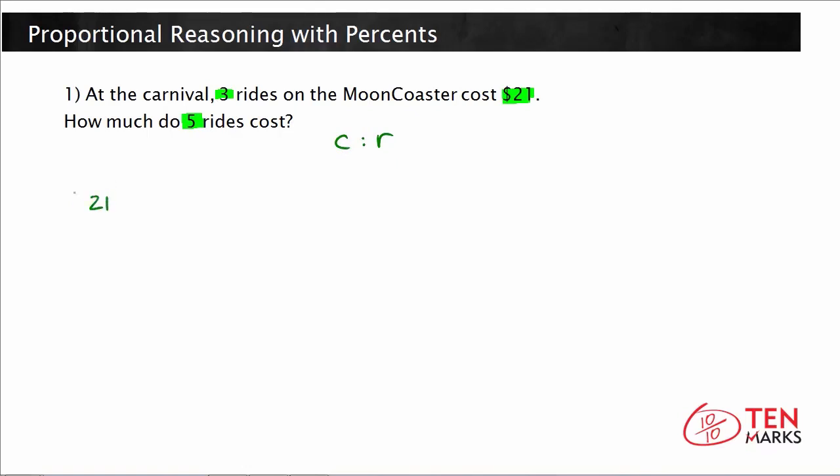We'll do the cost per ride, and the way to do this would be to set up the first fraction, which is $21 for three rides. Now, over here, what we don't know is the cost, and I'm going to let the variable C represent cost. So, the cost per five rides.